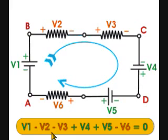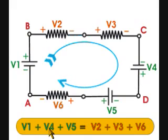V1 minus V2 minus V3 plus V4 plus V5 minus V6 is equal to zero. Or, V1 plus V4 plus V5 is equal to V2 plus V3 plus V6.